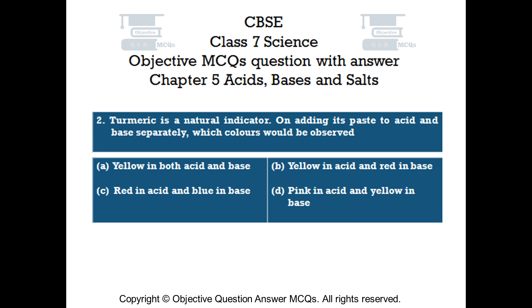Question number 2. Turmeric is a natural indicator. On adding its paste to acid and base separately, which colors would be observed? Option A, yellow in both acid and base. Option B, yellow in acid and red in base. Option C, red in acid and blue in base. Option D, pink in acid and yellow in base.